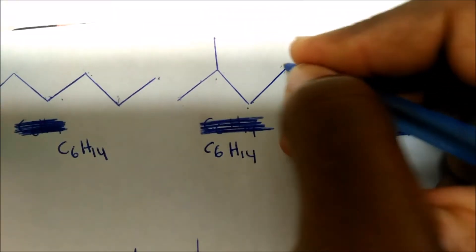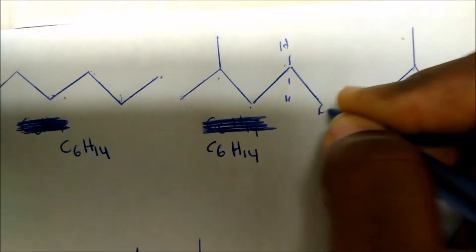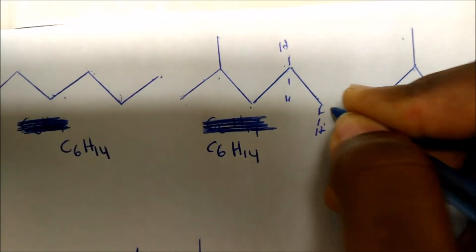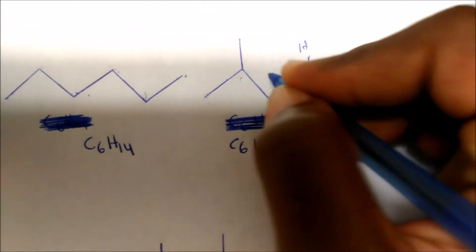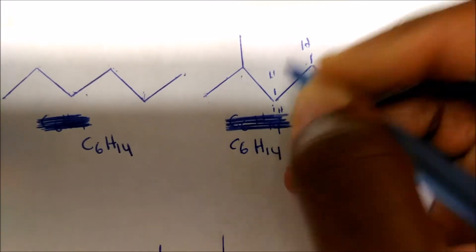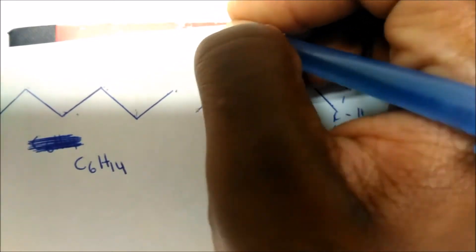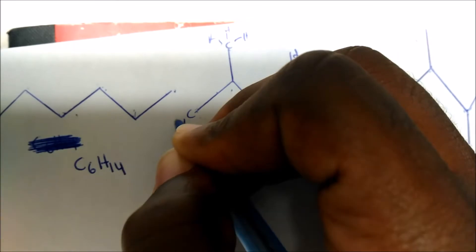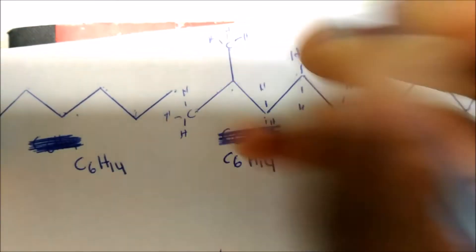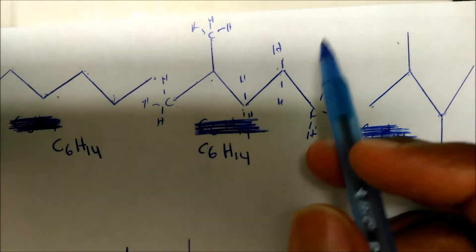For learning purposes, we can fill in these hydrogens to see what's really going on. We have a carbon bonded to three hydrogens at the endpoint. We have a carbon bonded to two hydrogens because it already has two bonds. Then we have carbons bonded to three hydrogens at each end. We're basically just filling them in mentally in our heads.